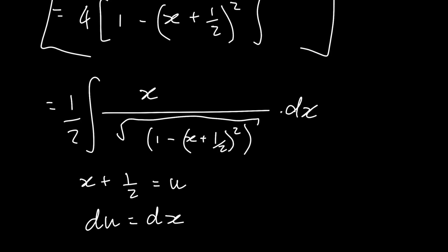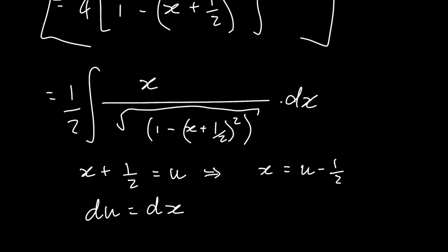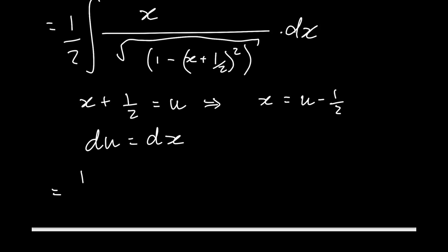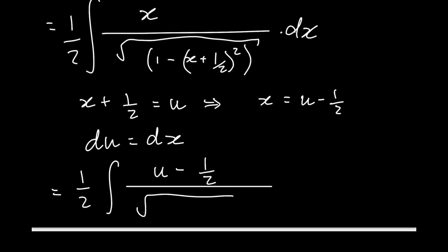But then we have this x here, and we don't really know what to substitute. So we simply remanipulate this, and now we have x is equal to u minus 1 over 2. So we'll go ahead and rewrite this integral in terms of u. We have u minus 1 over 2 in the numerator, all over the square root of 1 minus u squared, du.